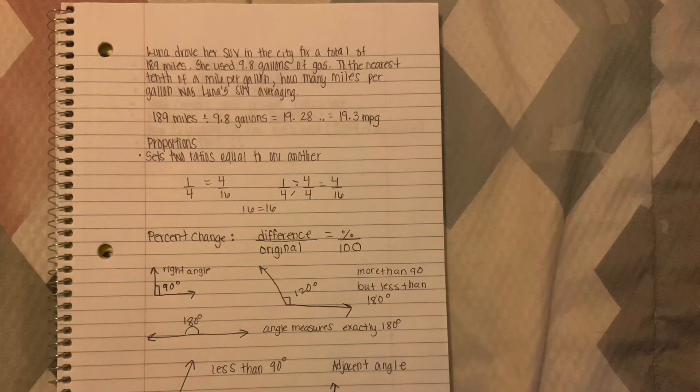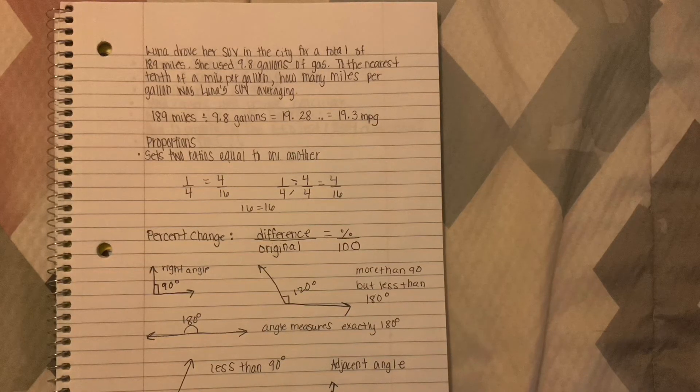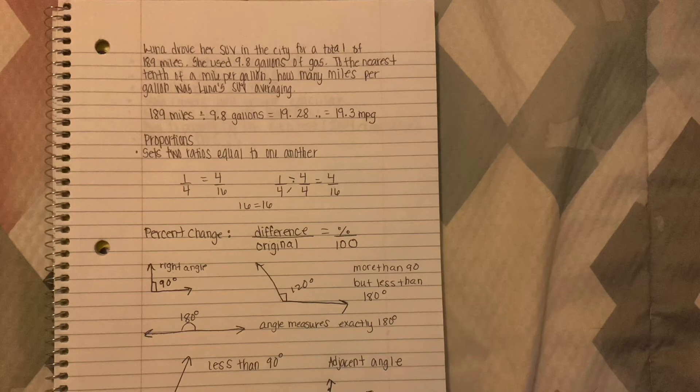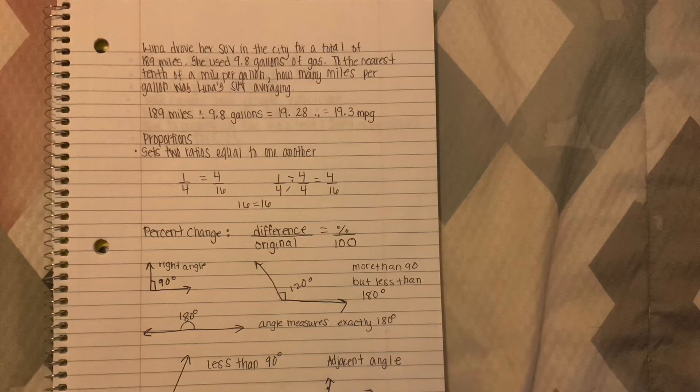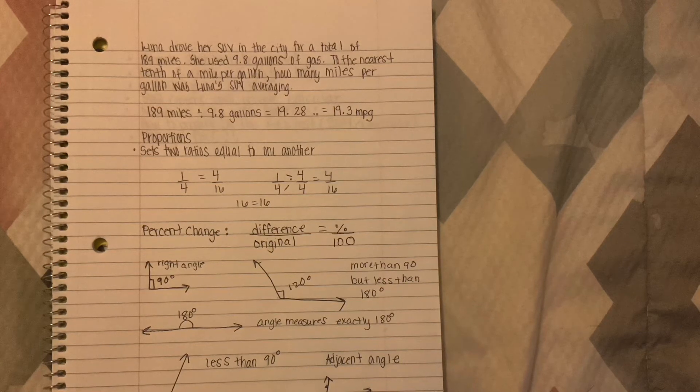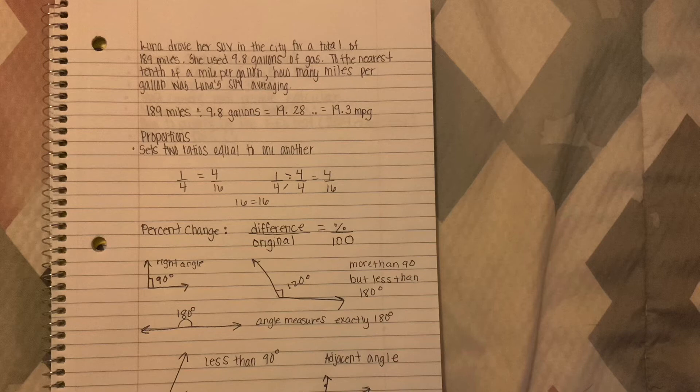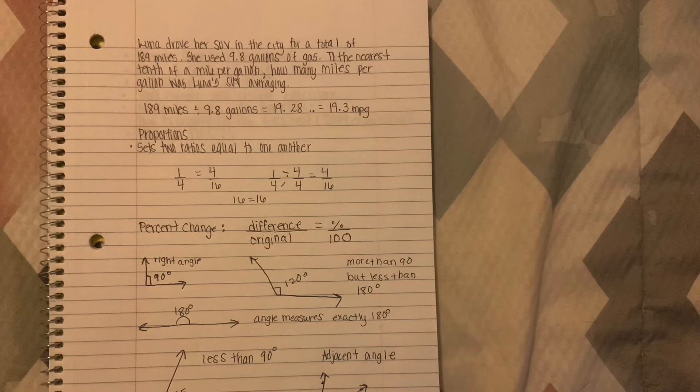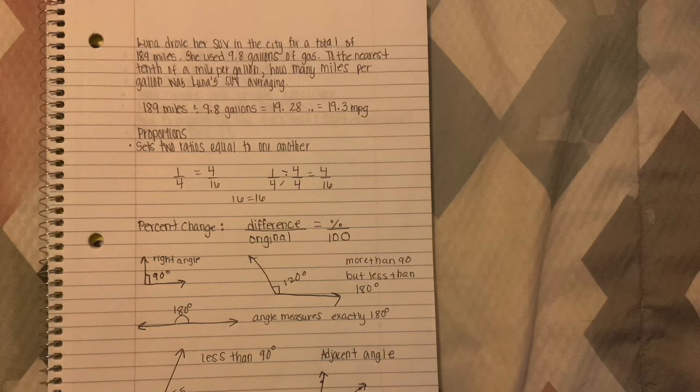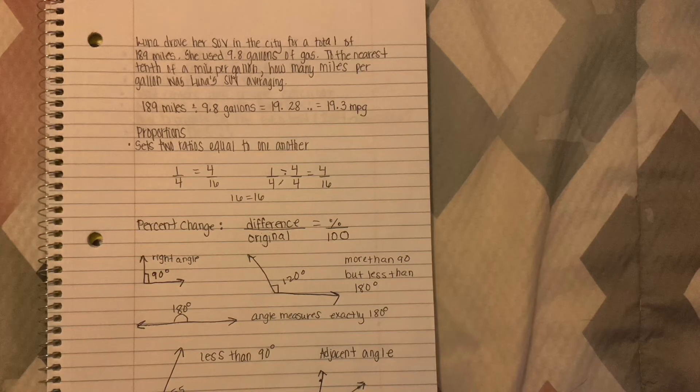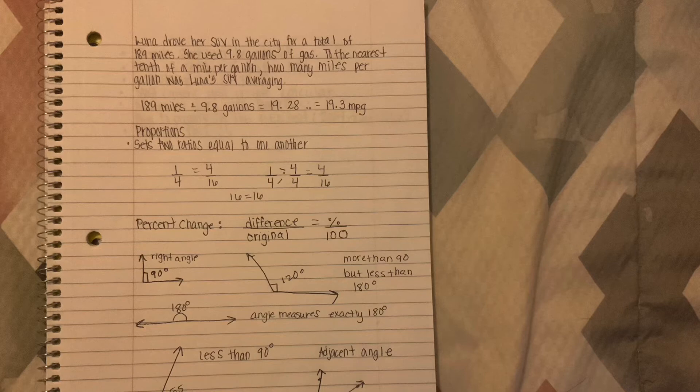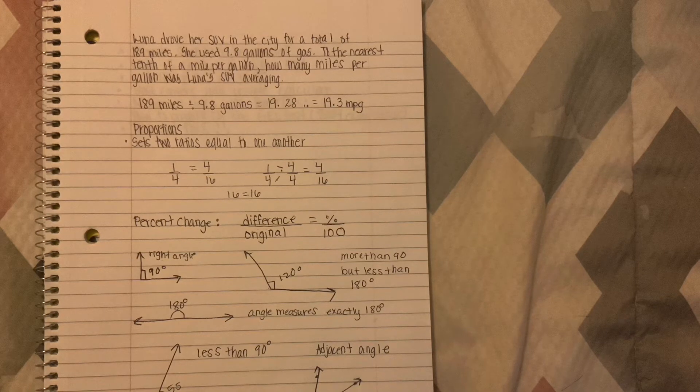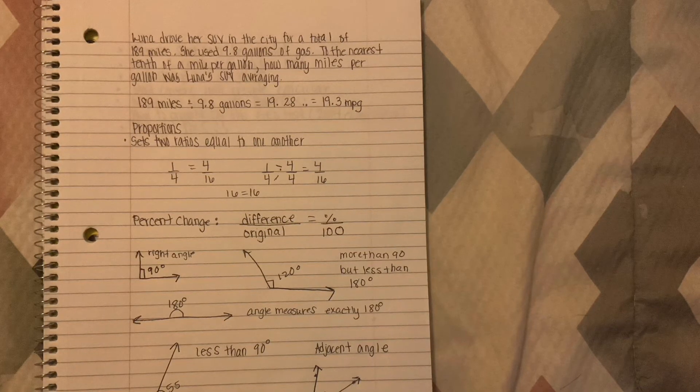On the test you are going to have percent change, and this is on the formula sheet so you don't have to really worry about remembering anything to do with formulas because it is provided. For that you have the difference over the original equals the percent over 100, and that is dealing with percentages. Like I said in the last video, I talked about how whenever you get 20% off, 40% off, 50% off, I just wanted to elaborate more on that so you can get familiar with actually seeing percent problems because we deal with that in everyday life.